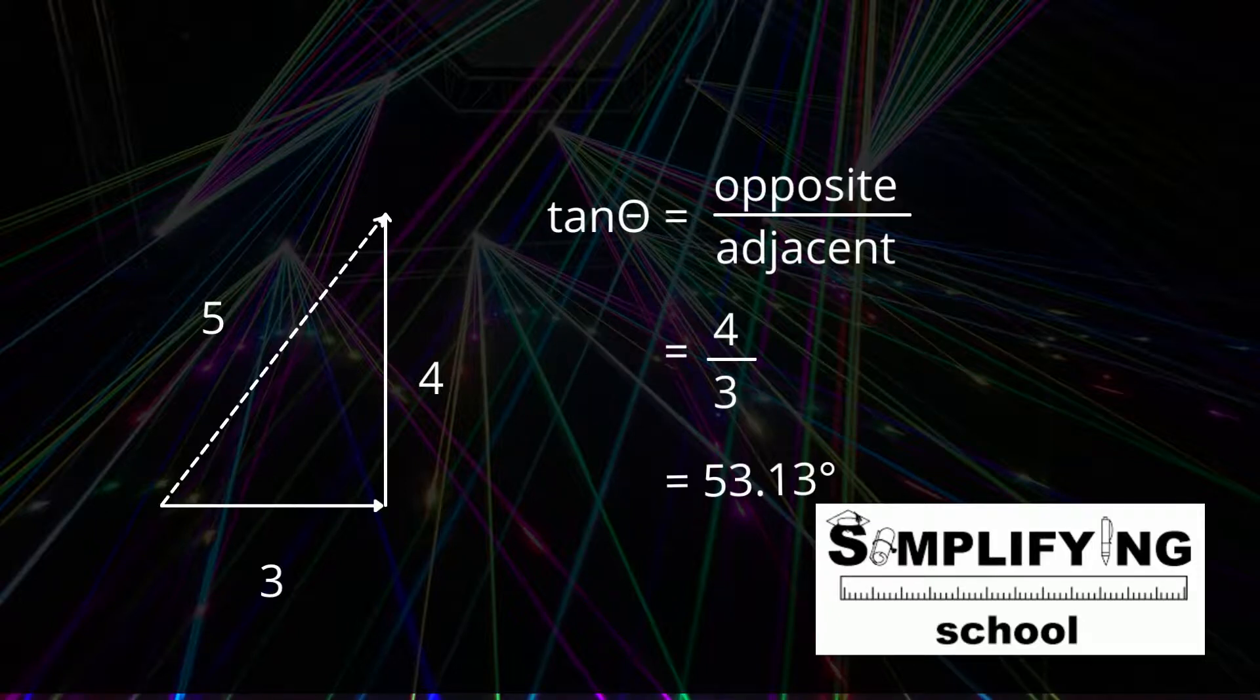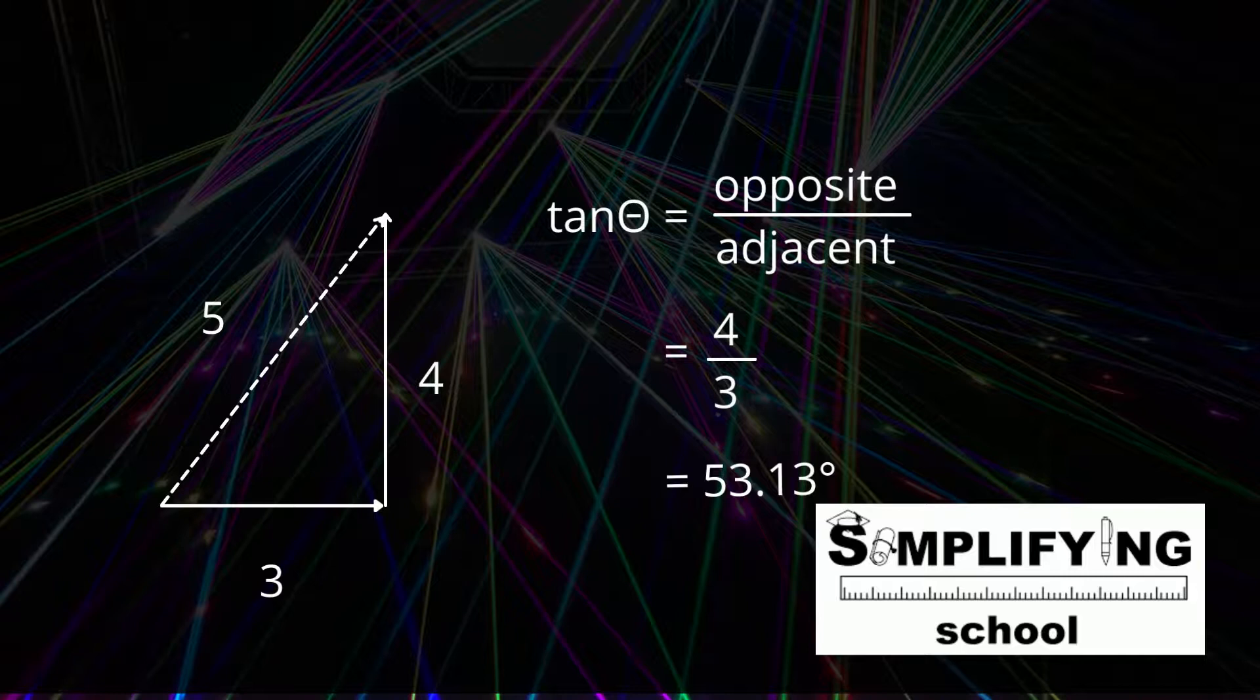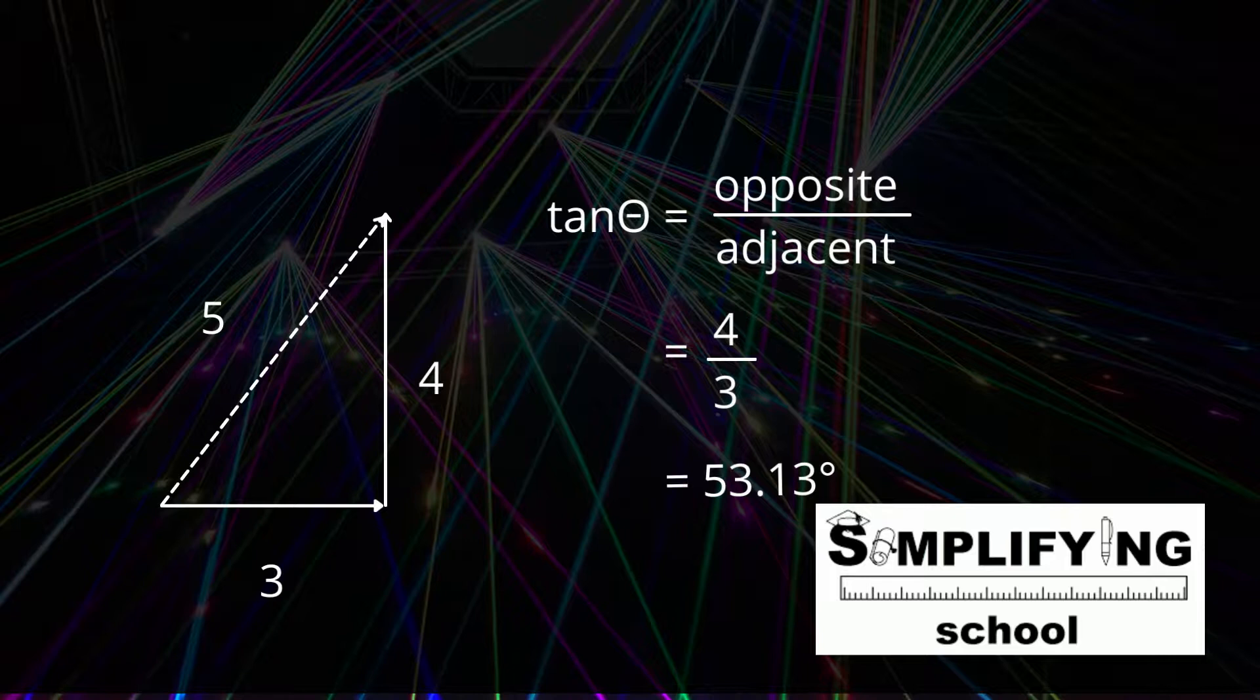We can use trig to find the direction. Remember, the tan theta is the opposite over the adjacent. And since we're working from the horizontal, unless otherwise asked, always work from the horizontal. It's just easier to stay in the same habit.